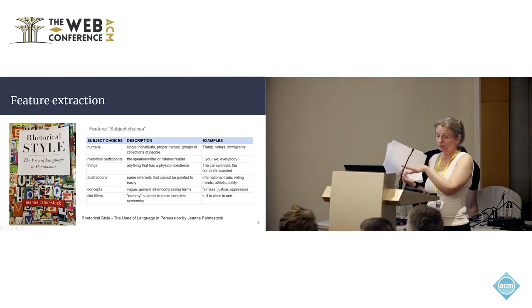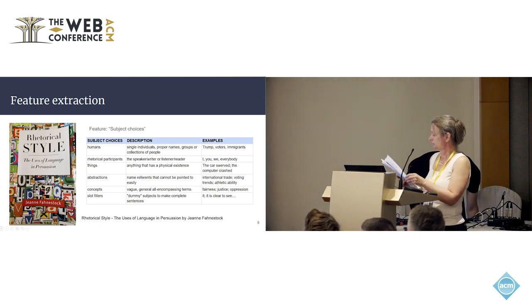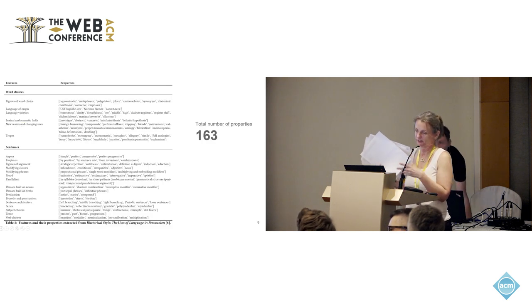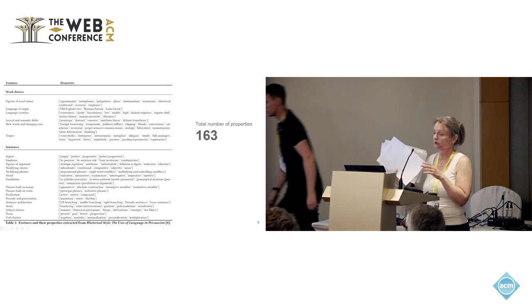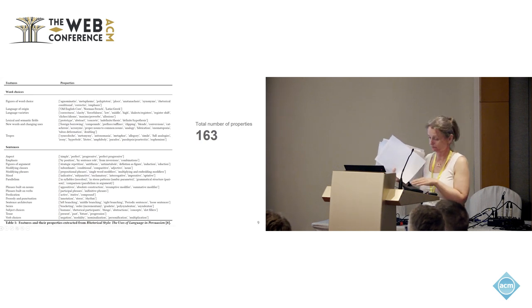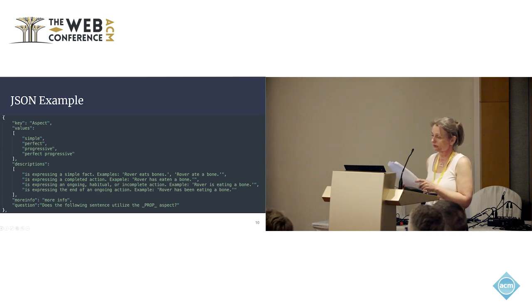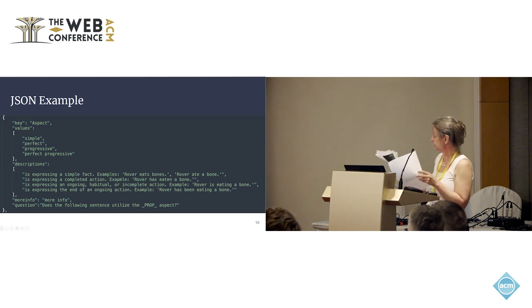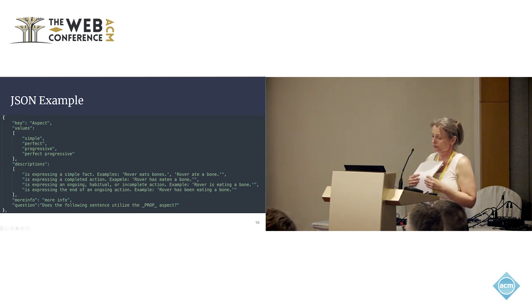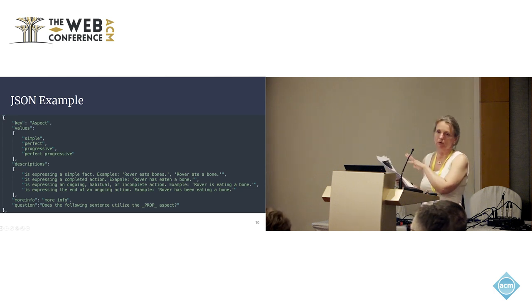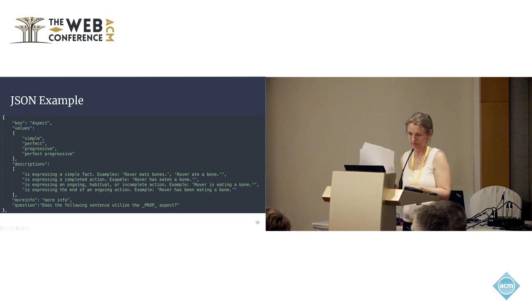The features are accompanied by descriptions and examples — it's a list of all features and their properties, around 160 of them. Here's what it looks like in JSON: we have a feature called 'aspect,' with associated values — simple, perfect, progressive, perfect progressive — and their descriptions and definitions. For example, simple aspect is 'expressing a simple fact,' with examples like 'Rover eats bones' or 'Rover ate a bone.' This is done for all 160 data points.